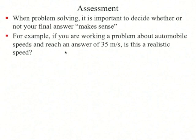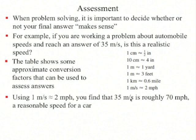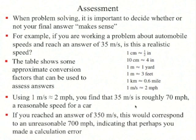The final step of the model–visualize–solve–assess strategy is assess: make sure your final answer makes sense. For example, if you're working on a problem about a car and reach an answer of 35 meters per second, is this reasonable? A meter per second is about two miles per hour, so this car would be moving about 70 miles per hour — a reasonable highway speed. If you had reached 350 meters per second, that would mean 700 miles per hour, so either the problem is set up incorrectly or you made a calculation error.